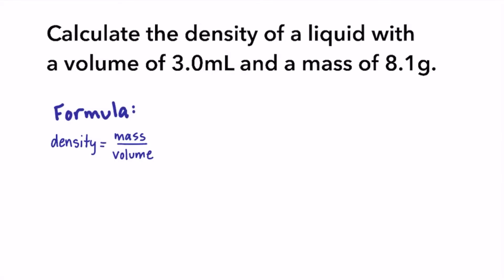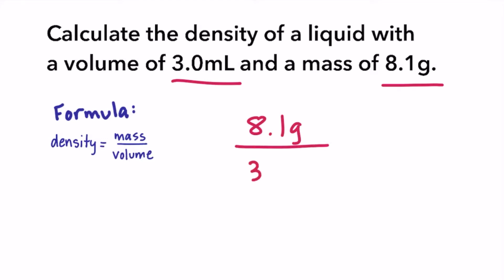Calculate the density of a liquid with a volume of three milliliters and a mass of 8.1 grams. First, we substitute the values into the density formula, and then we calculate 8.1 grams divided by three milliliters. The final answer is 2.7 grams per milliliter.